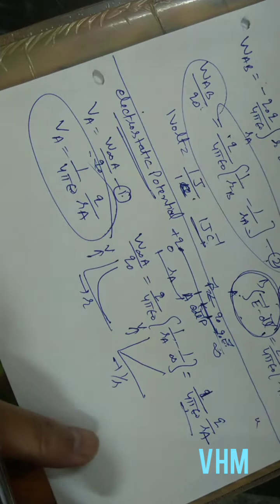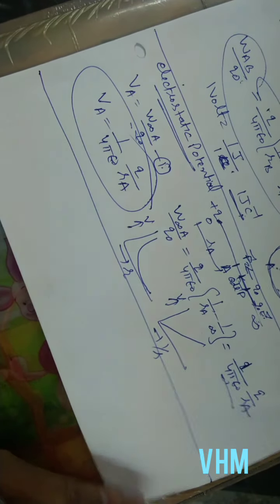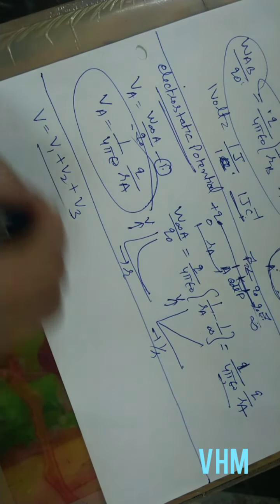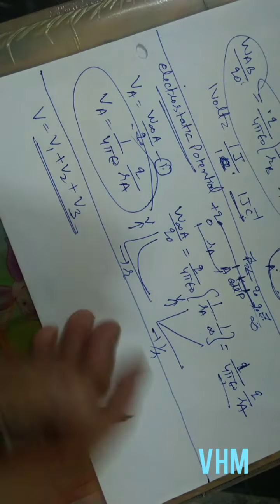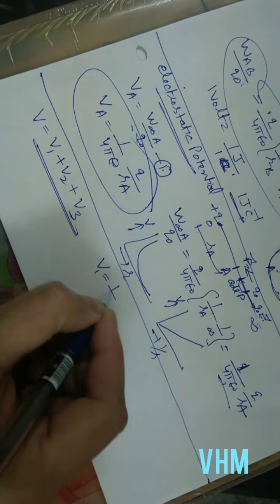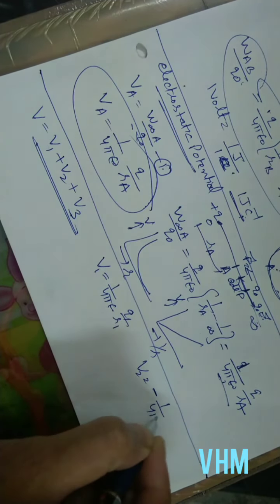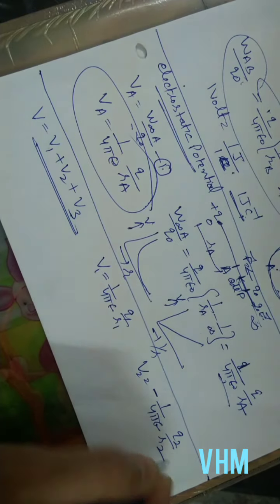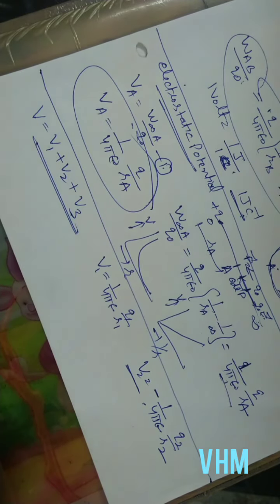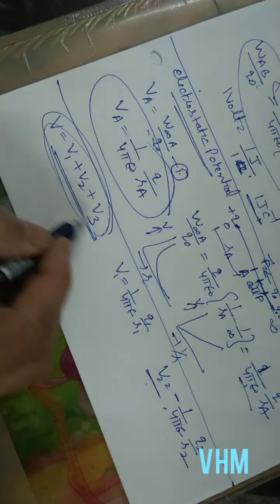If we have a number of point charges, how do we calculate the potential due to multiple charges? Since potential is a scalar quantity, the total potential is the sum of individual potentials. For a positive charge: 1/(4πε₀) · Q₁/R₁. For a negative charge: minus 1/(4πε₀) · Q₂/R₂. Because it is a scalar quantity, we must mention the sign of the charge — positive or negative — and then add the potentials for the total.